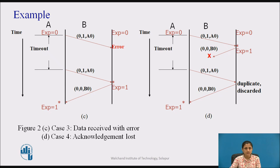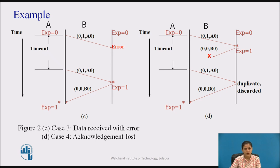In Figure 2c, case 3 shows the situation where a received frame contains an error. After sending a frame, the sender starts a timer. The receiver recomputes the checksum after receiving the frame. If the frame is erroneous, the receiver will not send the acknowledgement, so after the timeout, the sender retransmits the frame.